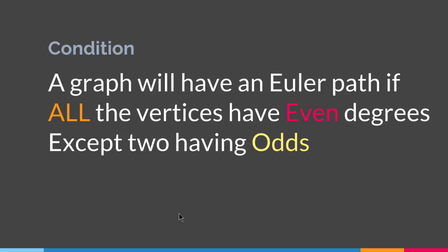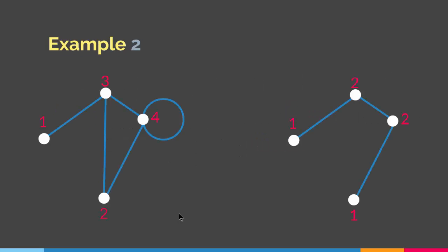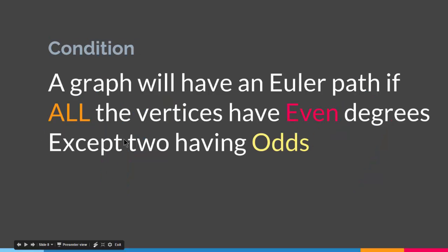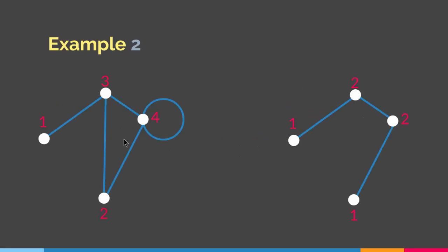And that is the particular condition for having an Euler path. A graph will have an Euler path if all the vertices have even degrees except two having odd degrees. As we looked at these examples, we can see that all the vertices have even degrees except two. In this example these two vertices have odd degrees, and in this particular example these two vertices have odd degrees. So for a graph to have an Euler path, all the vertices have to have even degrees except two.